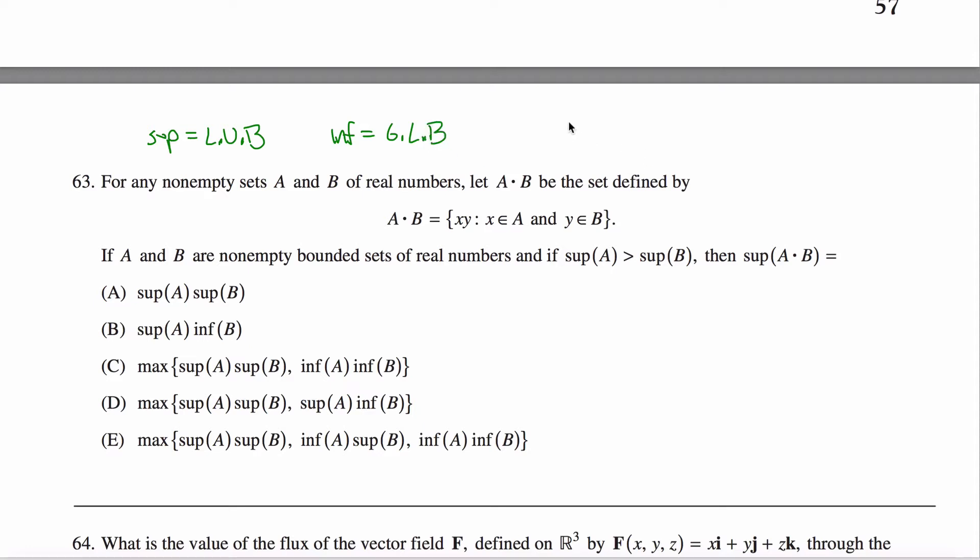So for example, if my set A is all the numbers from zero to one, then my sup would be equal to one and my inf would be equal to zero because this is the smallest number